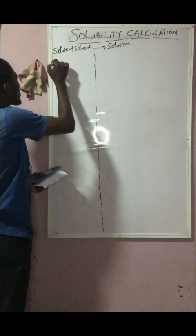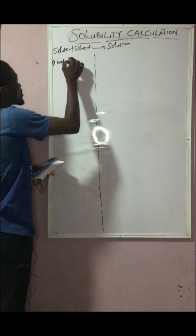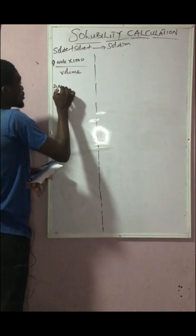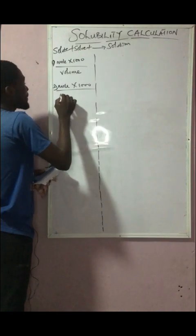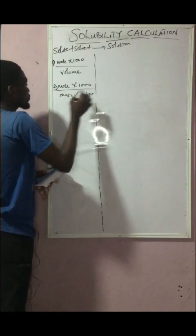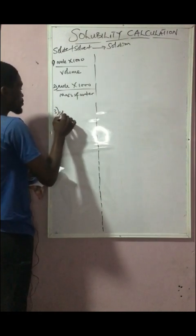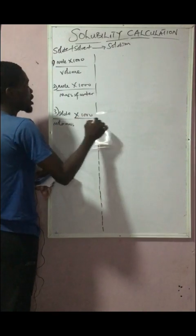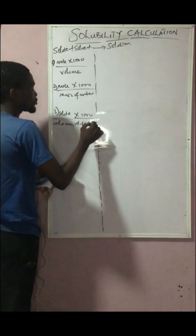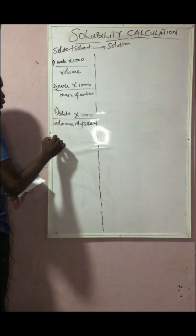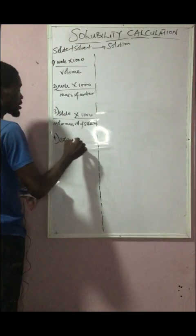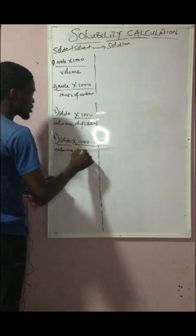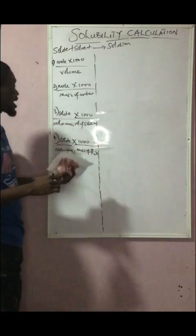The first formula for JAM candidates is: moles × 1000 / volume. The second formula is: moles × 1000 / mass of water. The third formula is: (mass of solute / molar mass) × (1000 / volume of solution). The fourth formula is: (mass of solute × 1000) / (molar mass × mass of water).